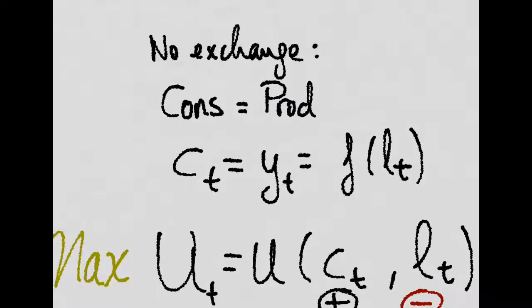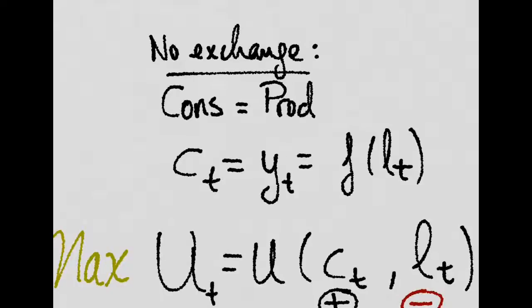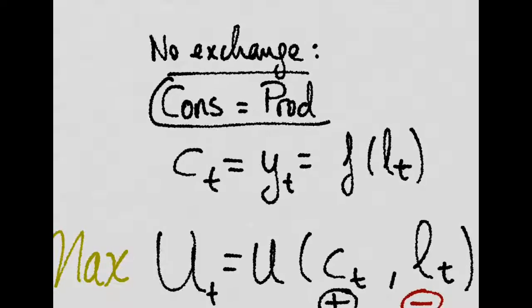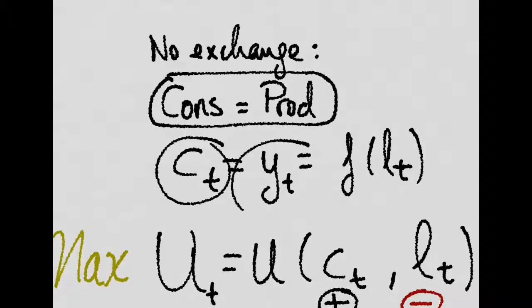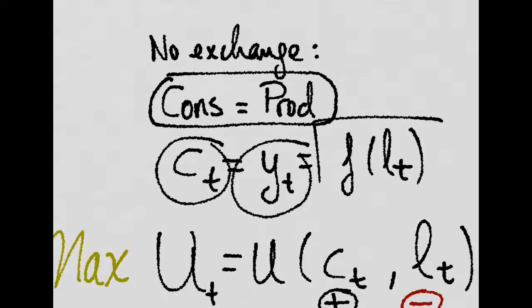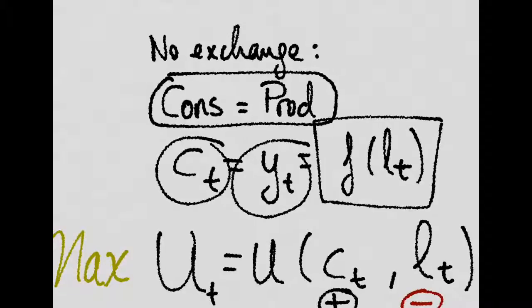And since there are no possibilities of exchange, he has to consume all that he produces. Thus, consumption is equal to production, which is equal to this function of the amount of labor he works.